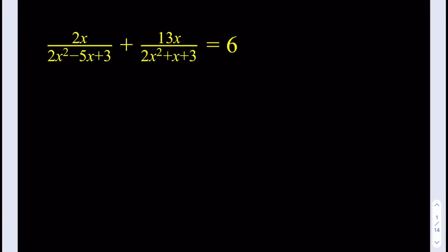Hello everyone, in this video we're going to be solving a rational equation as follows. We have 2x divided by 2x squared minus 5x plus 3 plus 13x divided by 2x squared plus x plus 3 and the sum is equal to 6.